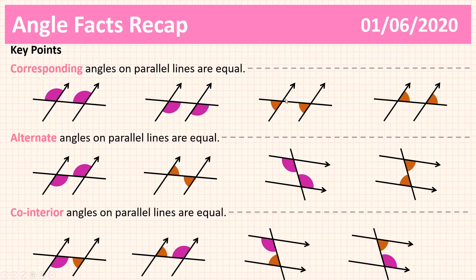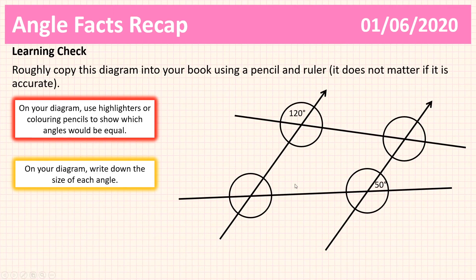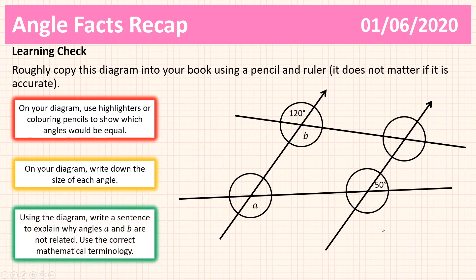Now here is what I'd like you to do: make a rough copy of this diagram in your books or on paper. First, take some coloured pencils or a highlighter and highlight all the angles that are equal in the same colour. Then write down the size of each of the angles in the diagram. Finally, using the diagram, write a sentence to explain why angles a and b are not related, using as much maths terminology as you can. Pause the video and have a go.